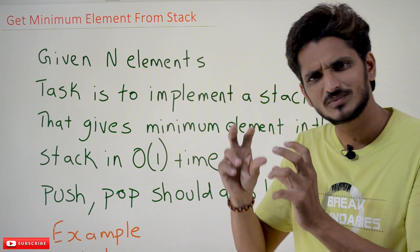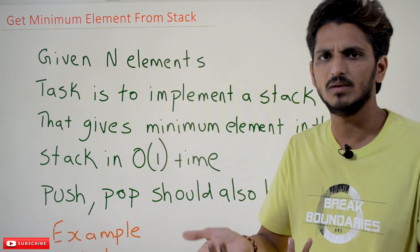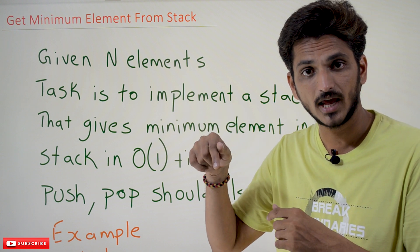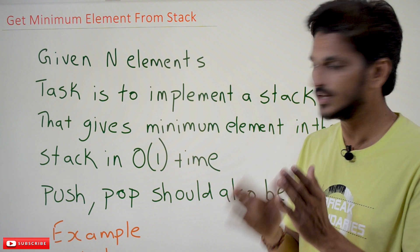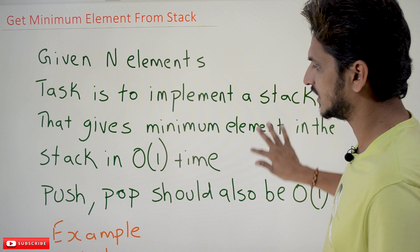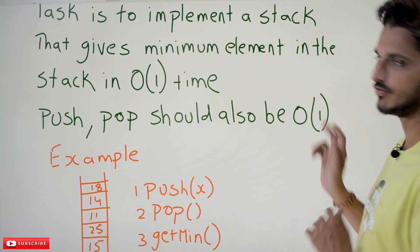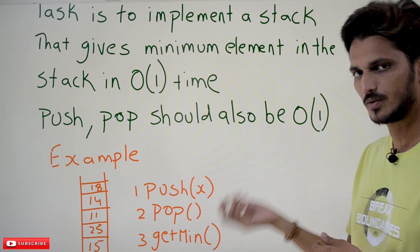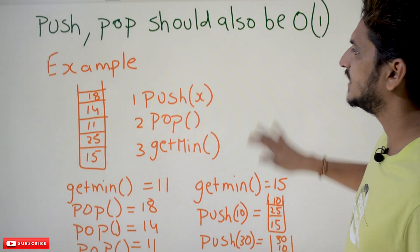This is what the difficulty is — you should achieve that in big O of one time, meaning some constant amount of time. Otherwise, getting the minimum element from a stack is very simple: just go down and check the minimum element. But it is going to take order of n, where n means number of elements. You should get it in big O of one time. Push and pop should also be big O of one.